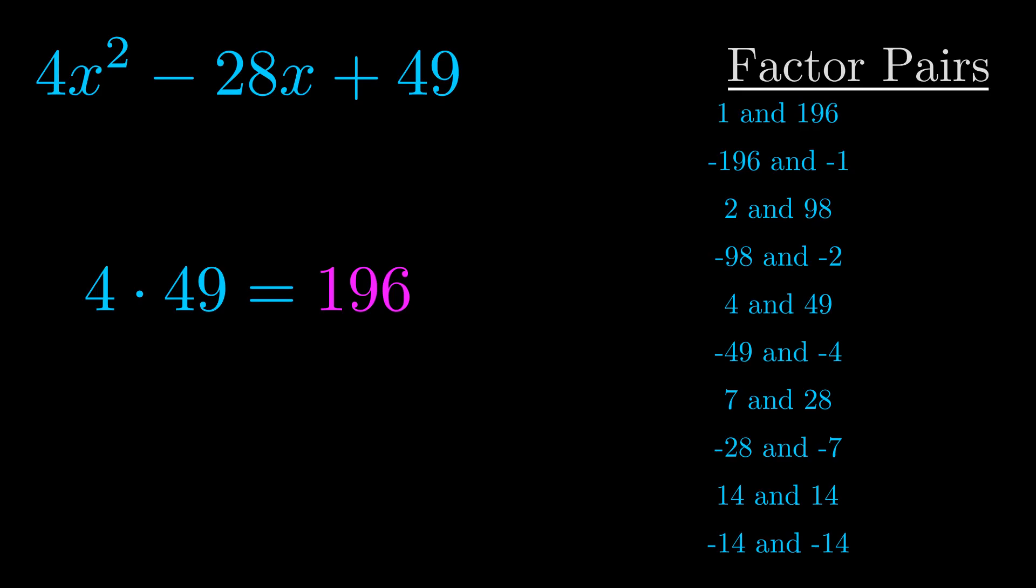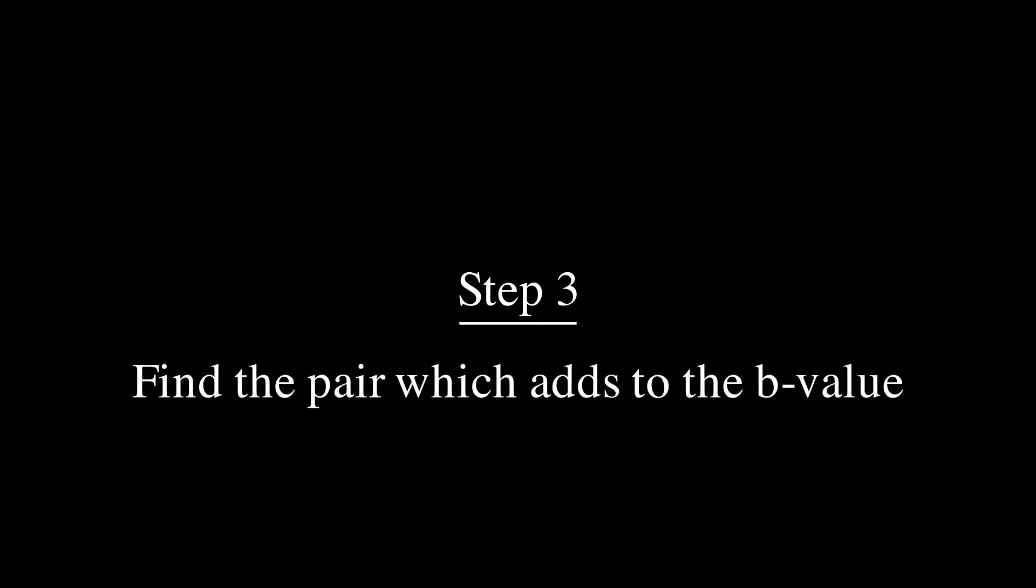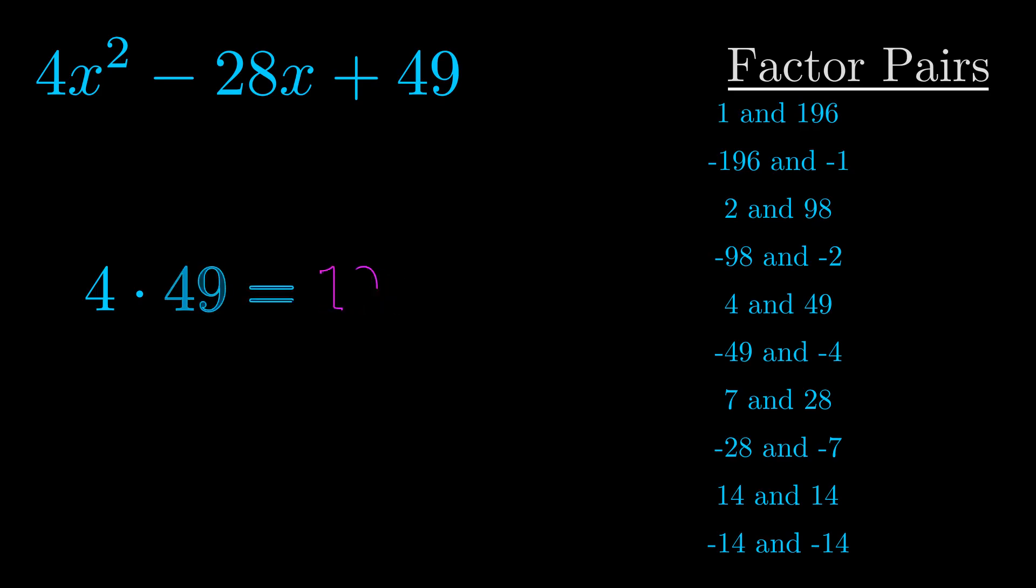Now once you have these factor pairs the goal is to find which of these pairs adds to the b value. The b value is the coefficient on the x term. That's the middle term, the one that we haven't done anything with yet. And really this is the only factor pair that we need.